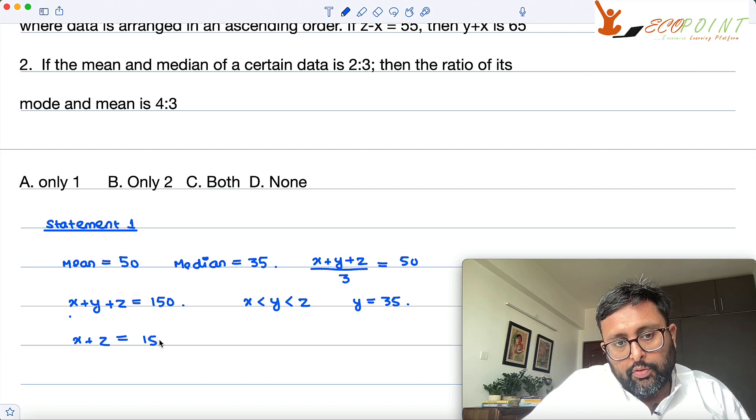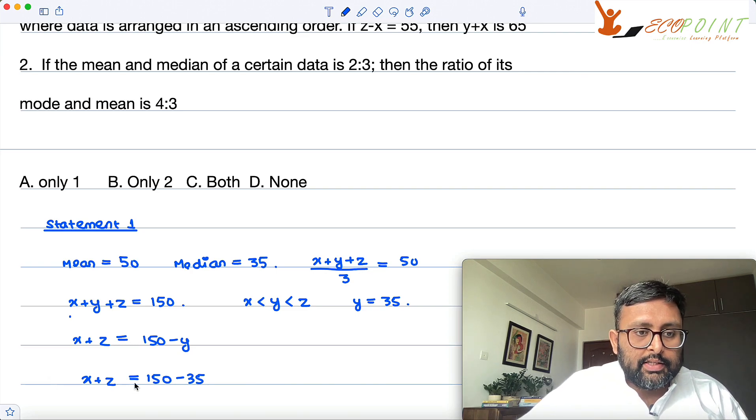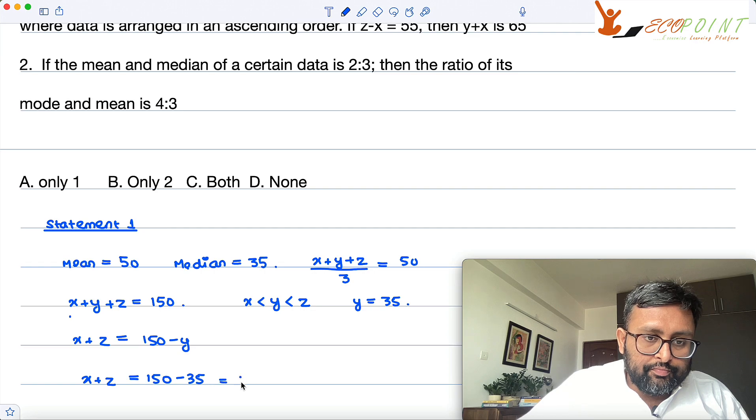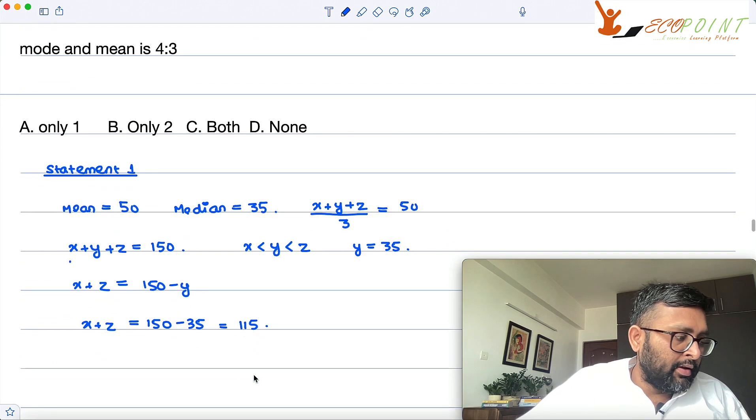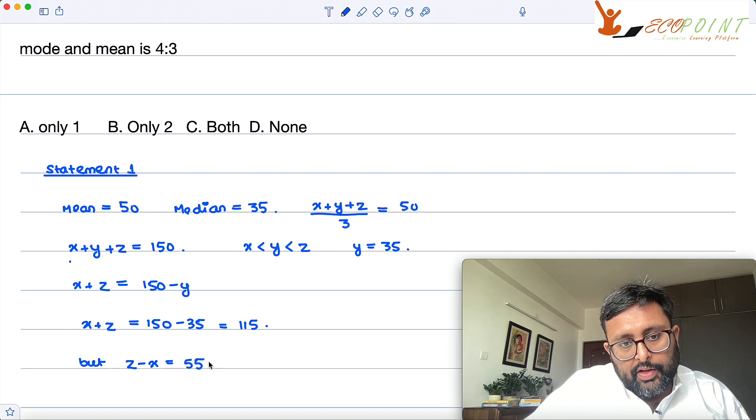So x plus z is equal to 150 minus y. That means 150 minus 35. One thing is given to you is this x plus z is 115, right? But what you are given? Z minus x is 55, right? Z minus x is 55.